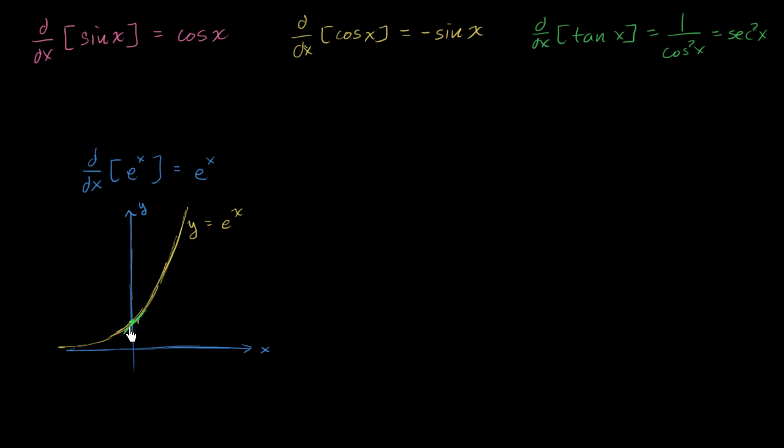Turns out that is also 1. Amazing. If I go to x is equal to 1, right over here, the function evaluated here gets us e to the 1 power, or just e. And what's the slope of the tangent line right over here? It is also e.